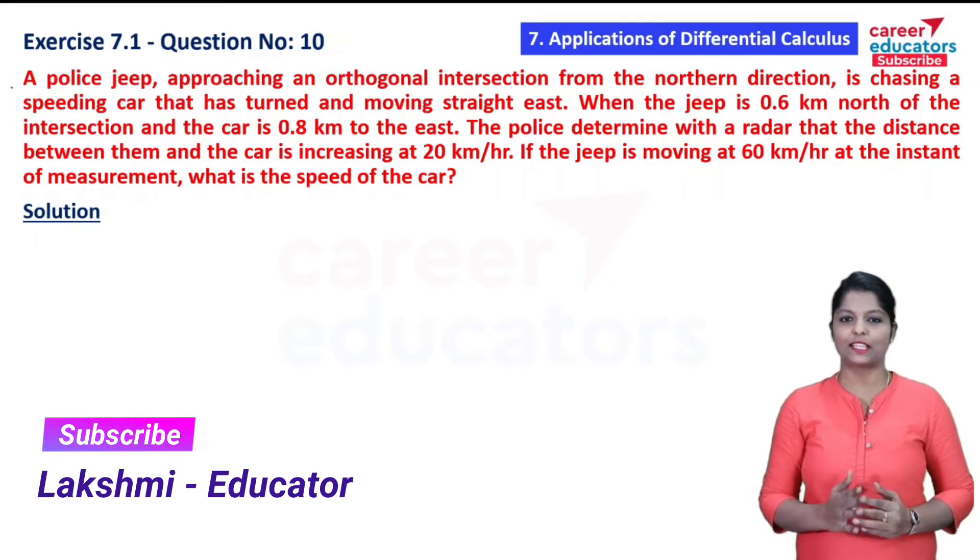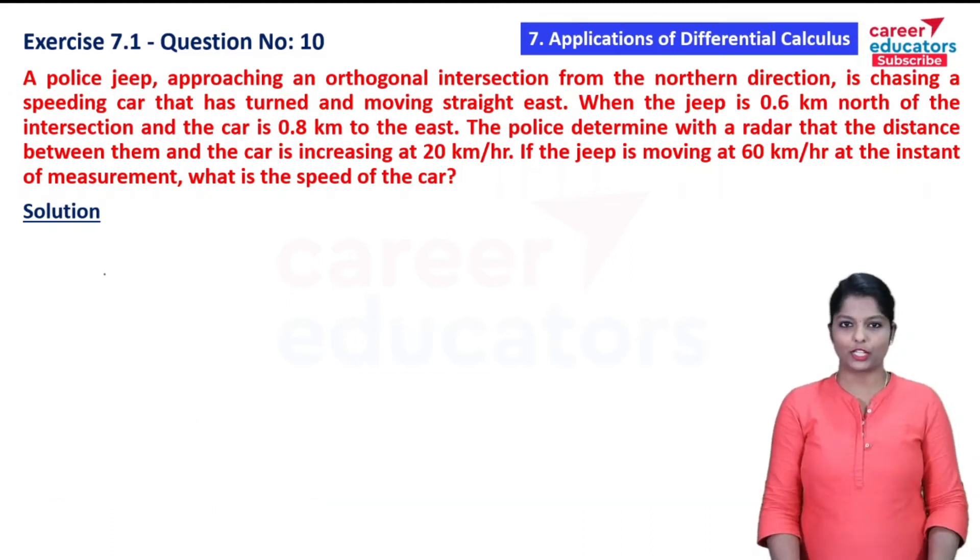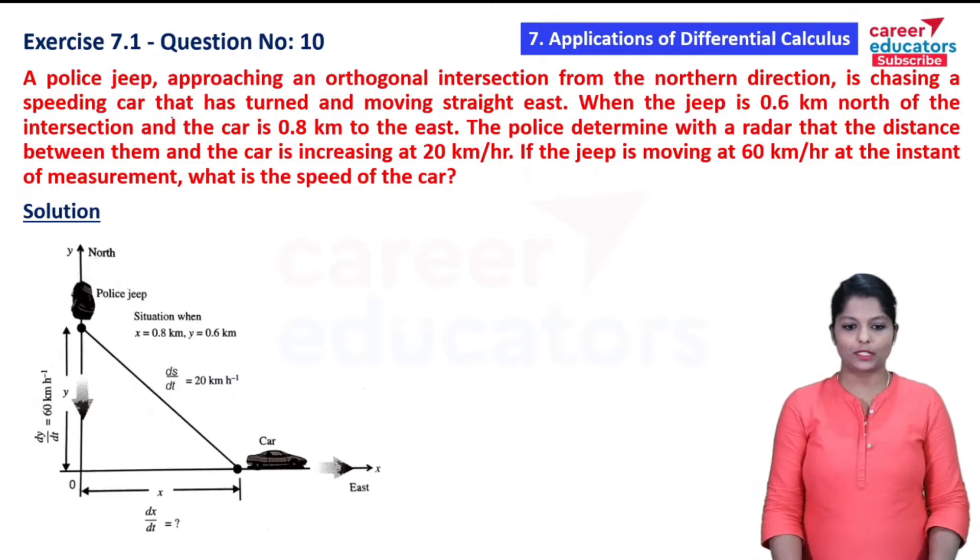Hi, I'm Laxmi and this is Career Educators. In this video, Exercise 7.1, Question Number 10. The question is: A police jeep approaching an orthogonal intersection from the northern direction is chasing a speeding car